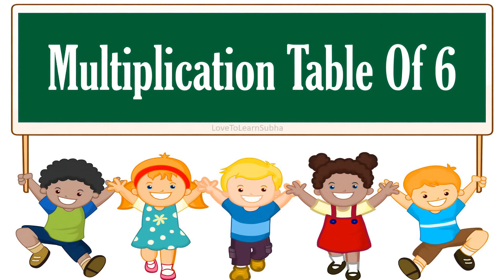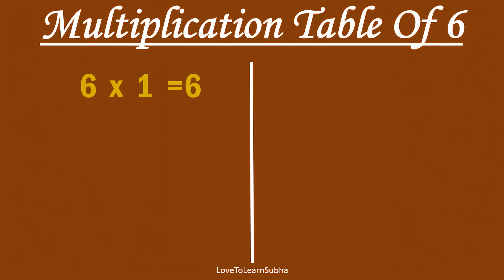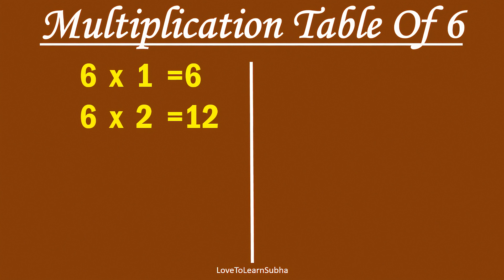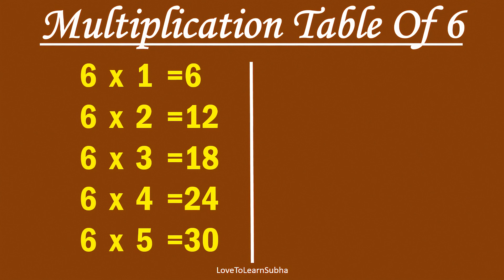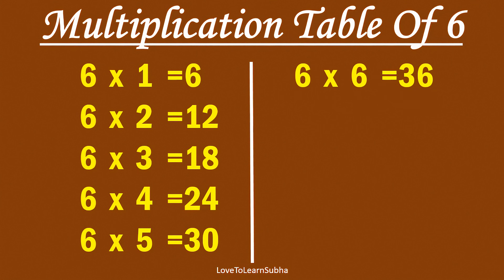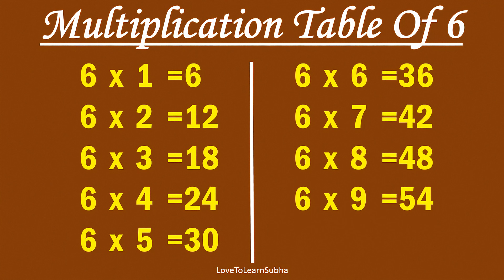Multiplication table of 6. 6×1 is 6, 6×2 is 12, 6×3 is 18, 6×4 is 24, 6×5 is 30, 6×6 is 36, 6×7 is 42, 6×8 is 48, 6×9 is 54, 6×10 is 60.